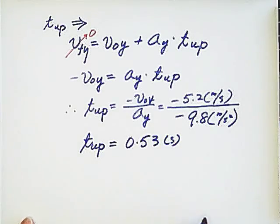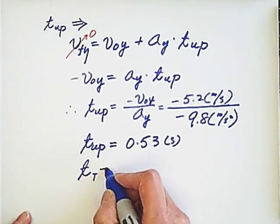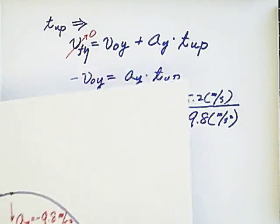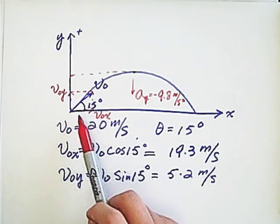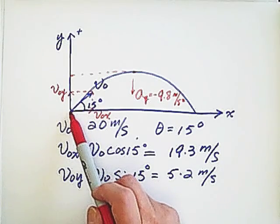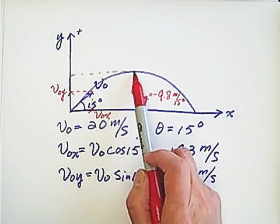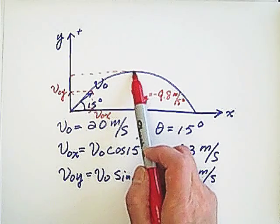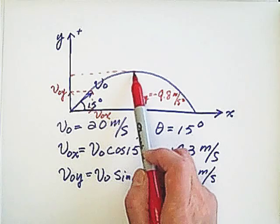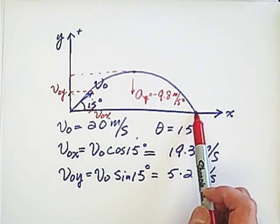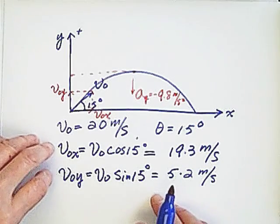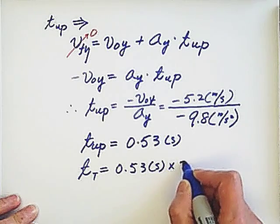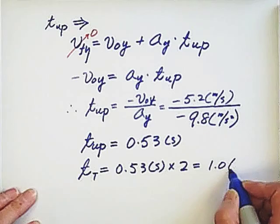We can also find the total time. It takes 0.53 seconds to reach the top, then the ball drops down. The time from the ground to the maximum height equals the time from maximum height back to the ground, so we multiply by 2 to get the total time: 1.06 seconds.